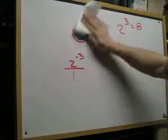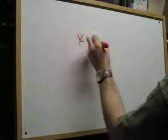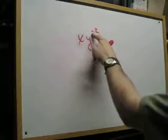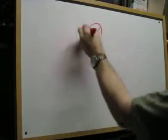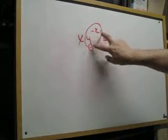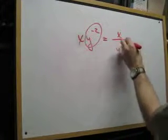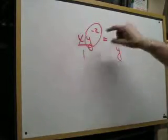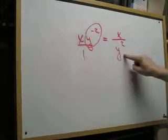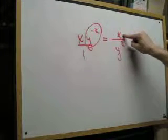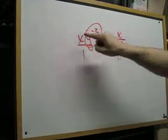So, for example, if I have XY to the negative 2, that negative 2, that negative is only on the Y squared. It is not on the X. So, what I do, in order to get that Y or this negative to disappear, to get the Y and the 2 in the proper position, I need to move it to its opposite position. Right now, it's in the numerator. It's supposed to be in the denominator and that makes it positive, but notice the X did not move. The X was not part of that negative.